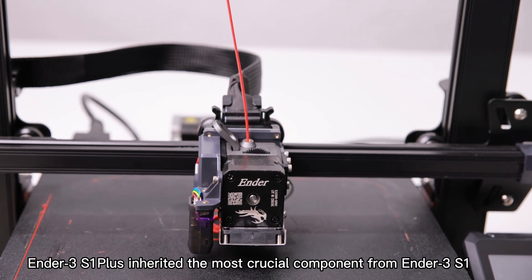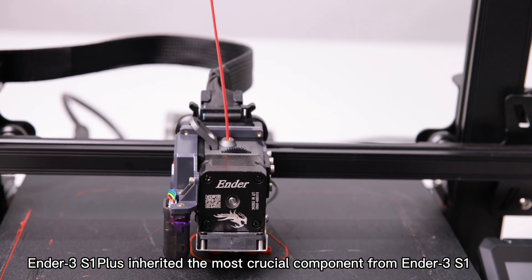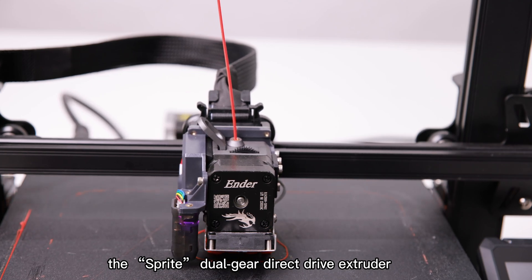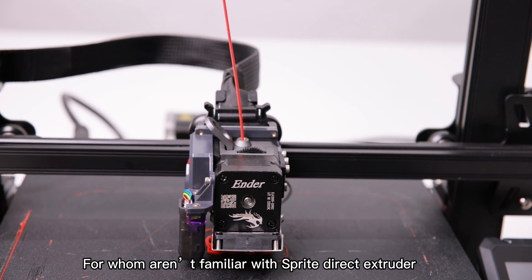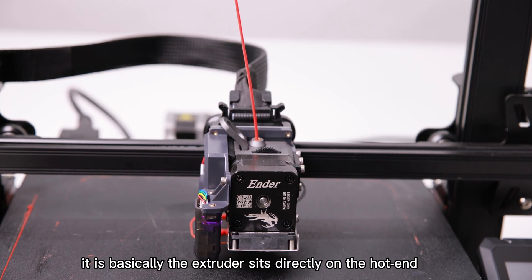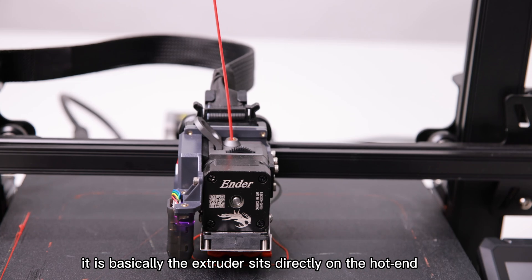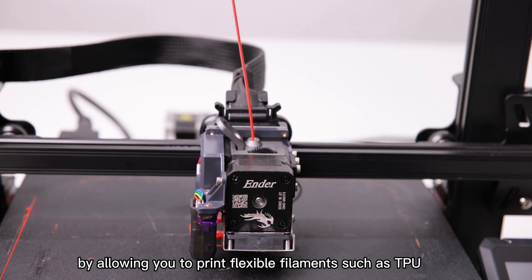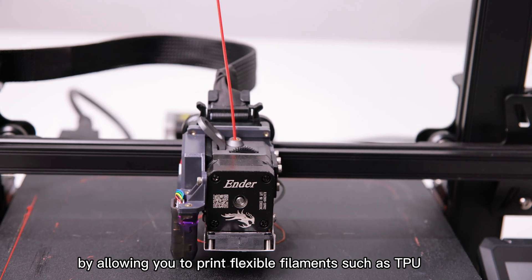Ender 3 S1 Plus inherited the most crucial component from Ender 3 S1, the Sprite Dual Gear Direct Drive Extruder. For those who aren't familiar with Sprite Direct Extruder, it is basically the extruder sitting directly on the hot end, and it hugely helps to expand your filament choices by allowing you to print flexible filaments such as TPU.